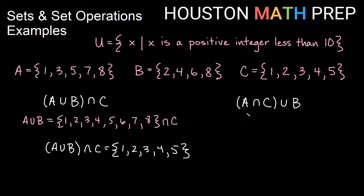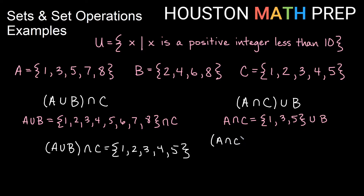Here we've switched it around: we have (A intersect C) union B. Let's look at A and C first. A intersect C — any elements in both A and C — gives us 1, 3, and 5. Once we've done the part in parentheses, we take that union B. If it appears in either list, we want it. That gives us 1, 2, 3, 4, 5, 6, and 8. When you see something like this, do what's in the parentheses first, then do the next operation with the other set.